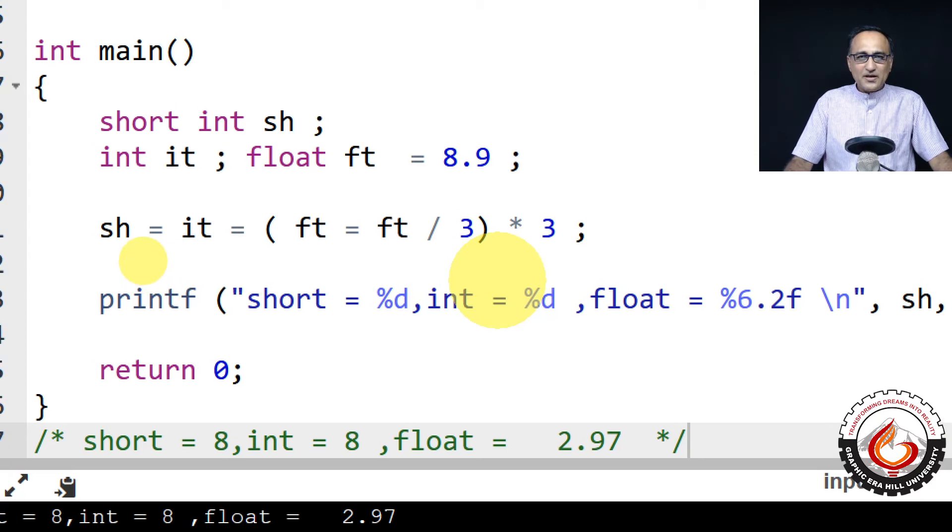This is quite similar to the previous example, except that I have changed the value of float in this particular piece of code. So here I have declared short int sh, int it, float ft equals 8.9.